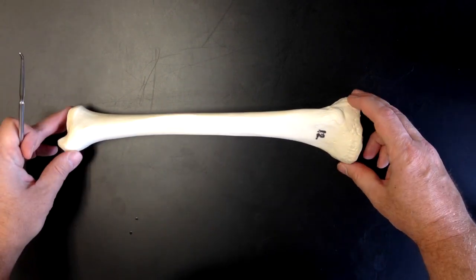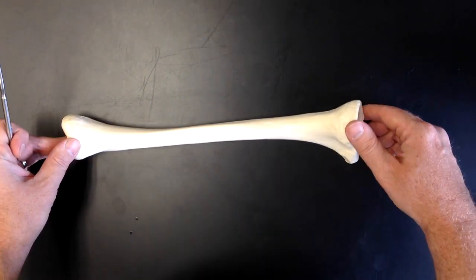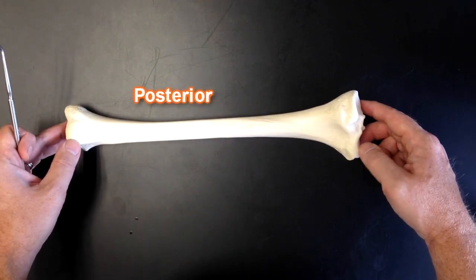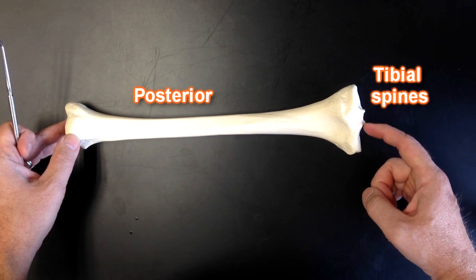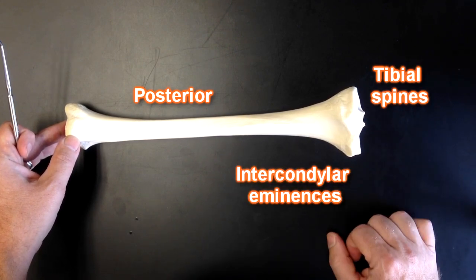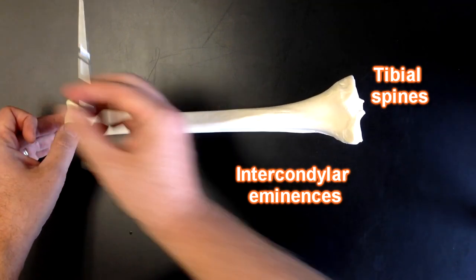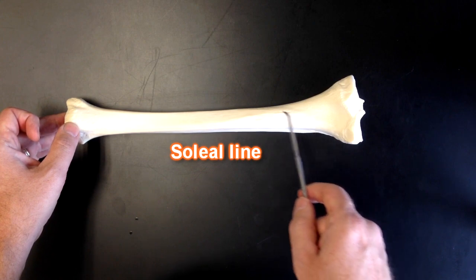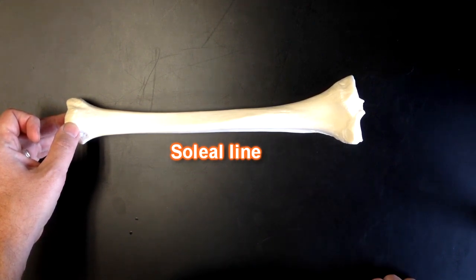If I were to roll the tibia over so that we can look on the posterior aspect, we could see the tibial spines or the intercondylar eminences. We can also see back here the soleal line. The soleal line is where the soleus muscle would attach.